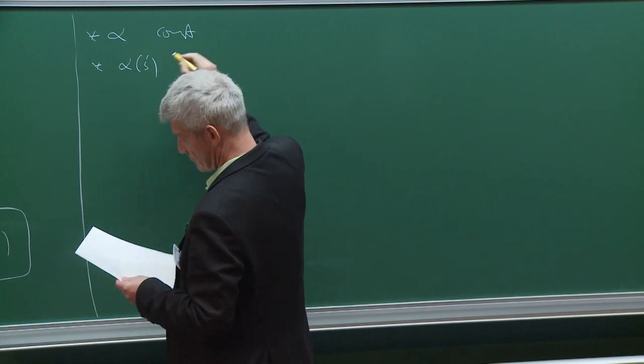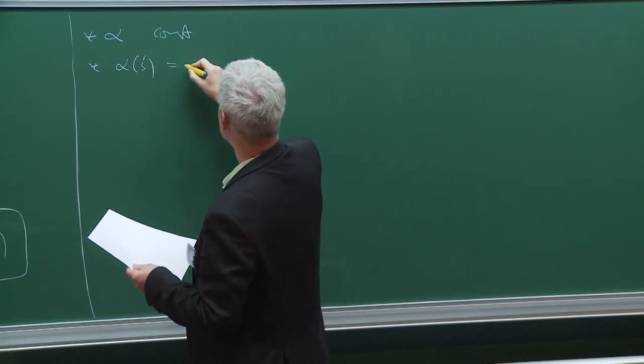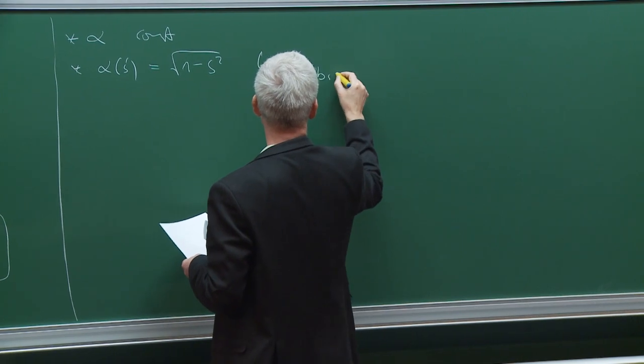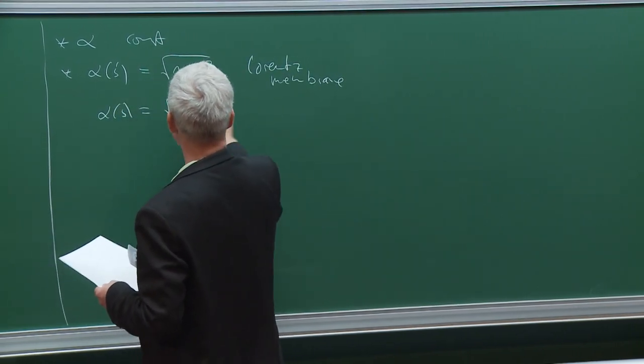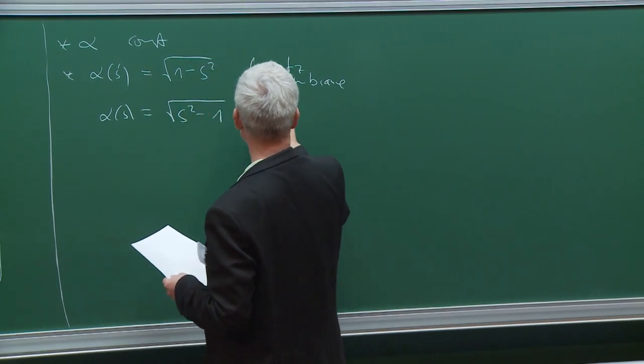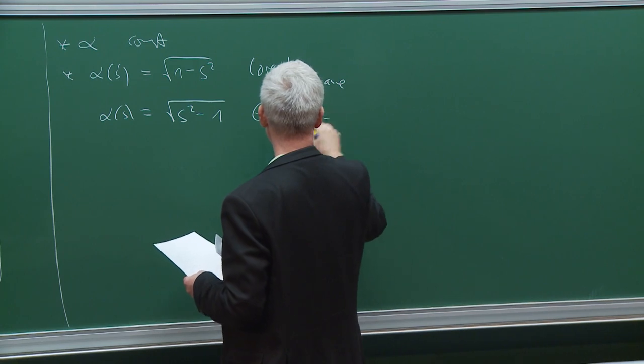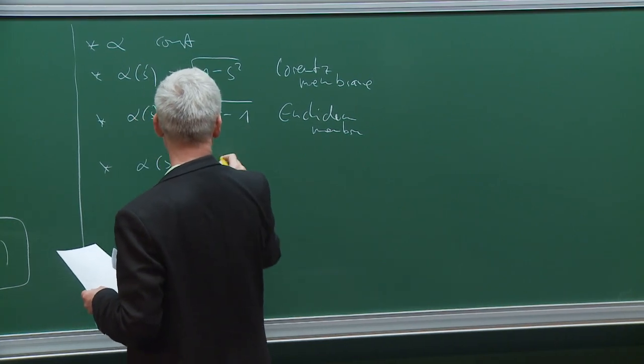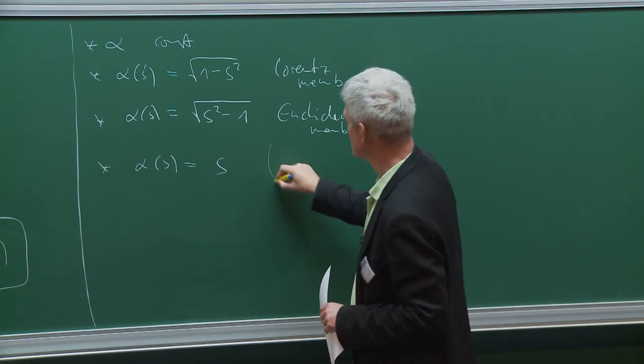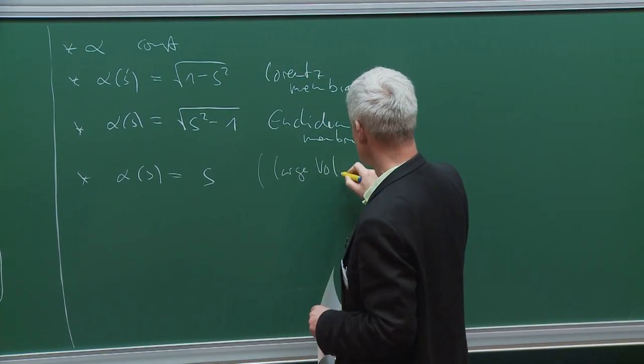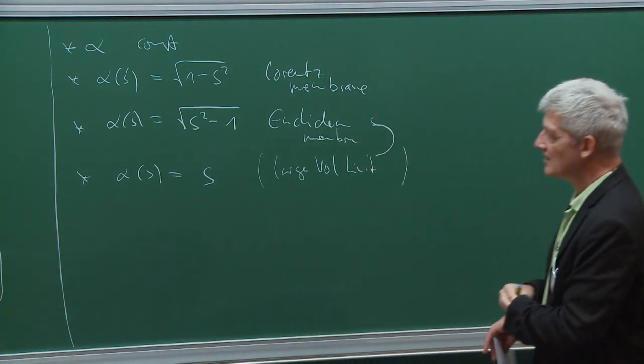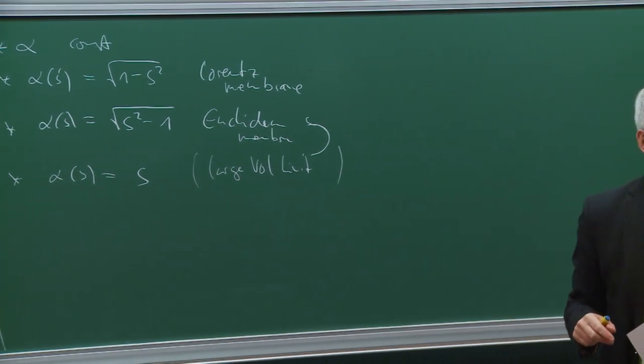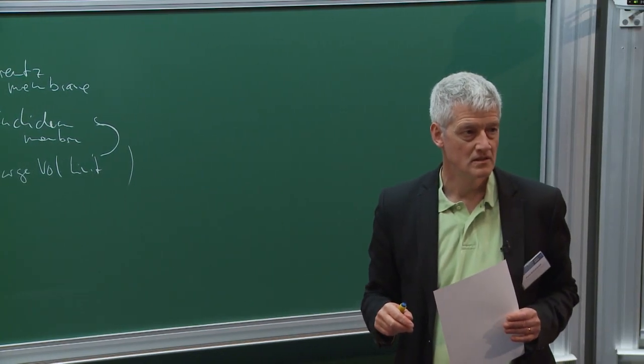Then the important things for some physics are this. So this is the Lorentzian membrane or Euclidean membrane. And for us, very important is the case alpha S equals to S. You can see this as a large volume limit of this. Something special seems to happen when the volume form is equal to square root of G.